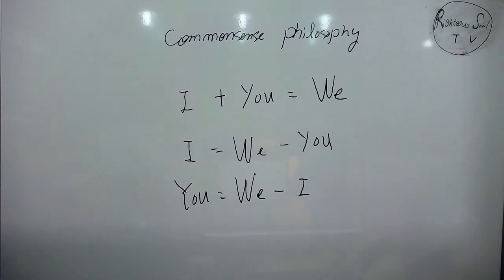How to living is particular. I plus You so We is common sense. I equal We minus You is common sense. You equal We minus I is common sense. But how to living is I plus You equal We, this is correct living ways. Incorrect livings: I equal We minus You, incorrect living. You equal We minus I.